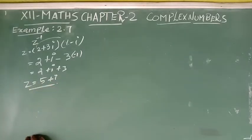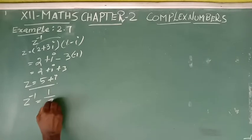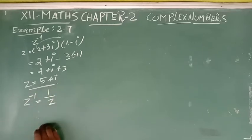Now we can find Z inverse. Z power minus 1 is Z inverse. Z inverse equals 1 by Z, so 1 by 5 plus i.